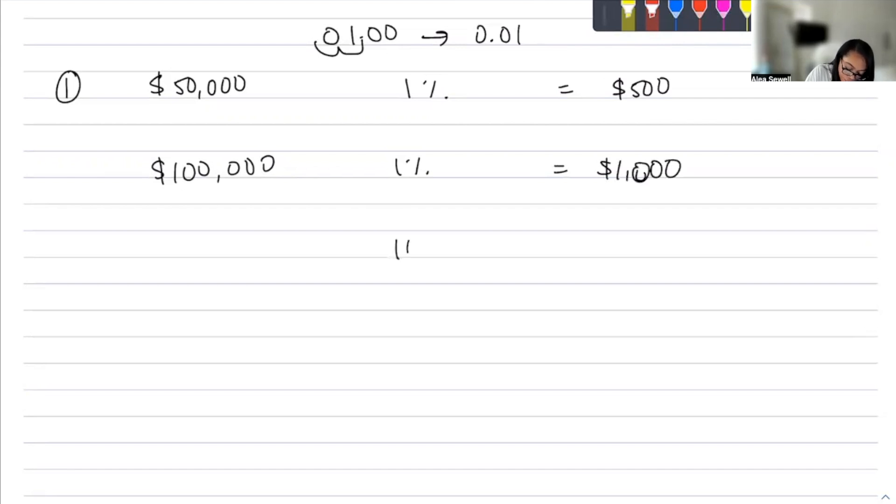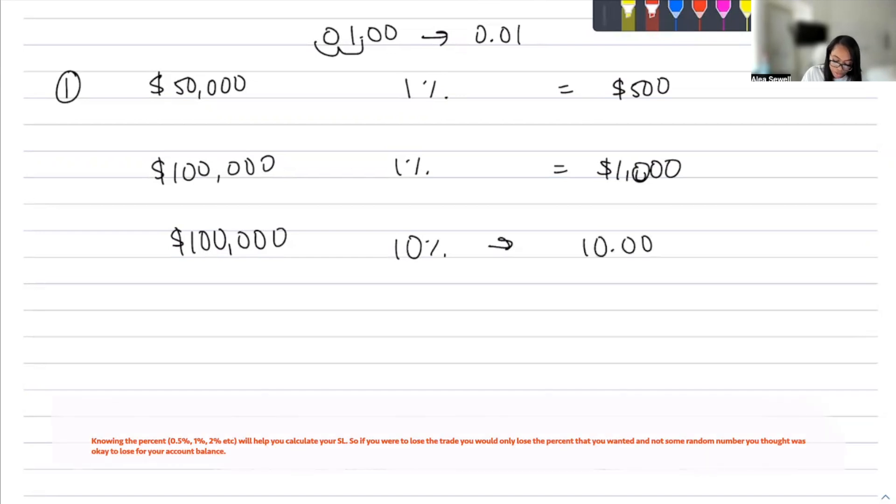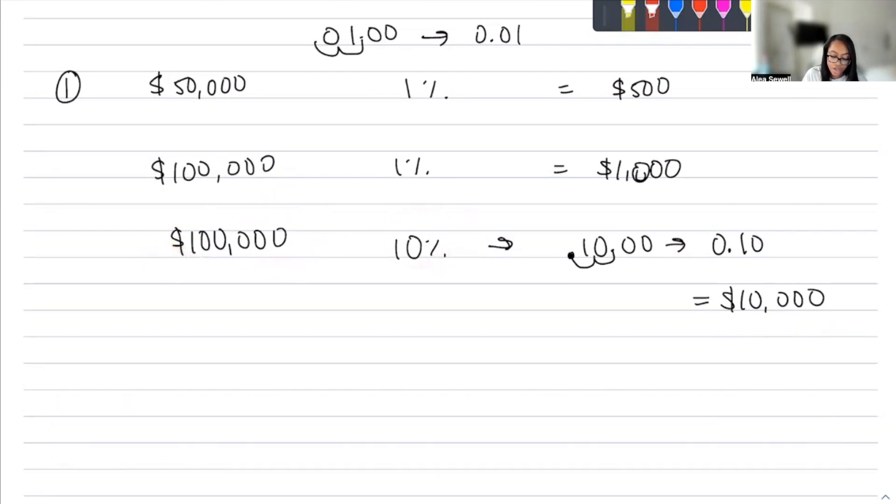We can do one more example. Let's say we want to get 10% of $100,000. Same concepts we used before. Since this is how you write the number 10, we're going to move the decimal over one, two times. Our new decimal is 0.10. And we're going to take 0.10 times $100,000, and that equals $10,000. So that's how you can calculate if you want to know a percentage of your account balance. Easy enough.